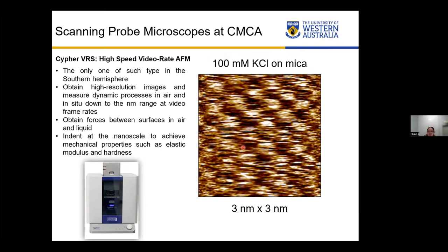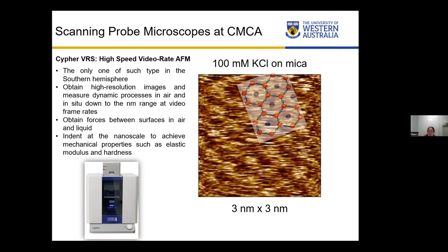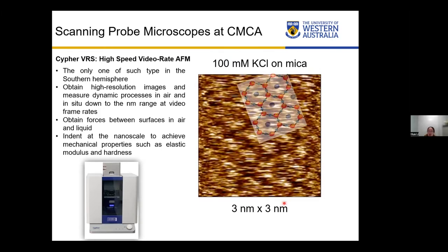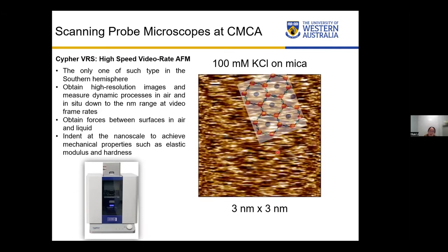Here is an example image captured by this AFM. The scale is 3 nanometers by 3 nanometers, and the system is a mica surface immersed in 100 millimolar potassium chloride aqueous solution. We can see single ions pretty clearly, which matches the mica lattice well. There is some noise because instead of a static image, that is actually a video — which means we can use this AFM to achieve high-resolution videos down to the molecular level. It's pretty amazing.